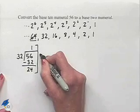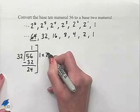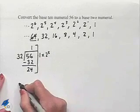What this tells us is that we have 1 times 2 to the 5th power as part of our expansion. Let's write that down at the bottom.